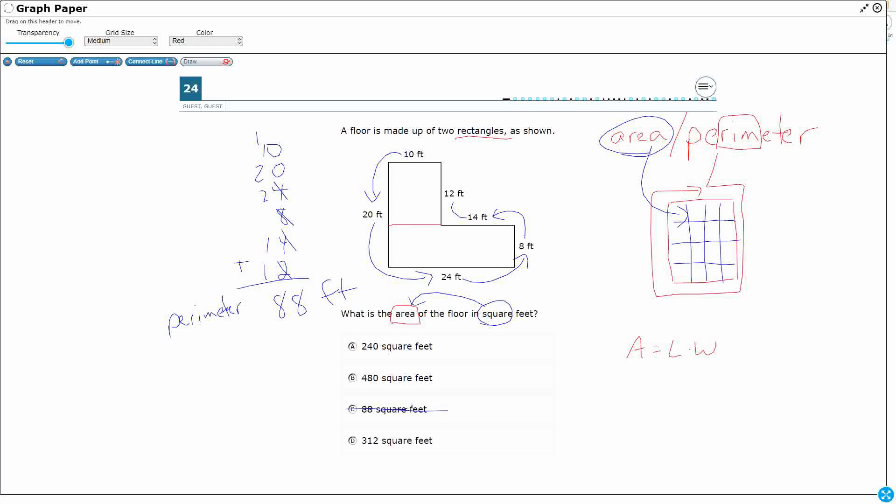We have what we call a composite shape, two rectangles stuck together. So we can cut this right here and we can say alright, let's deal with the area of this rectangle first, the area of this rectangle second, and then we'll add them.